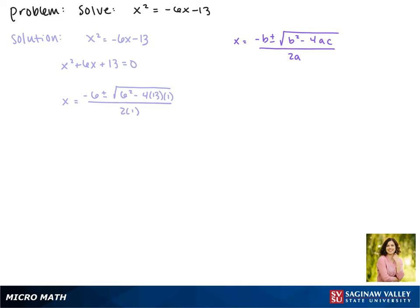Working out what's under the square root, we get x equals negative 6 plus or minus the square root of 36 minus 52, all divided by 2.